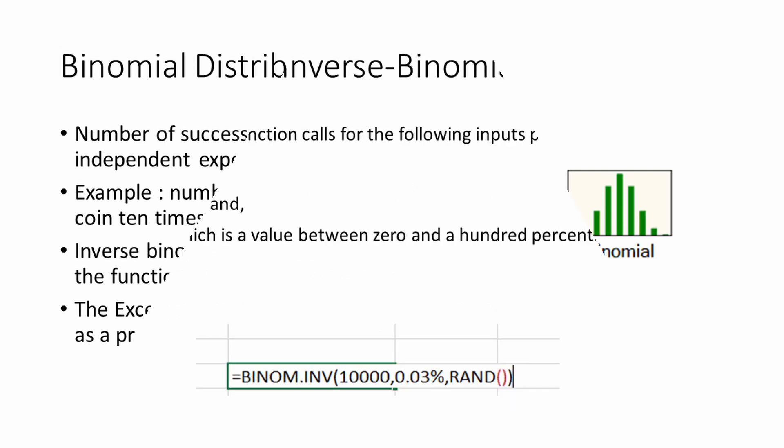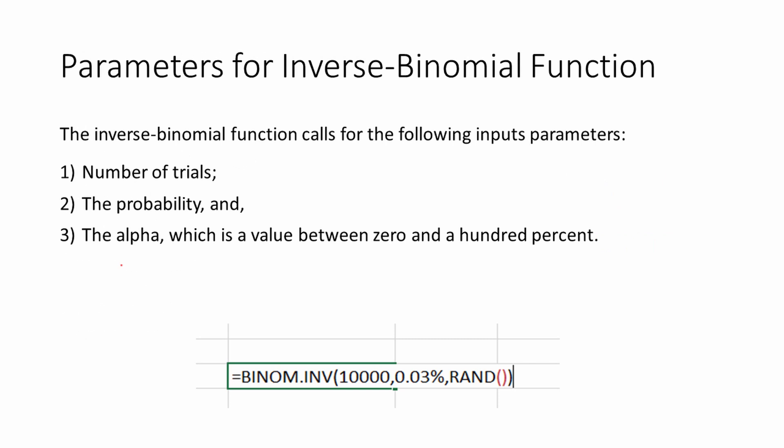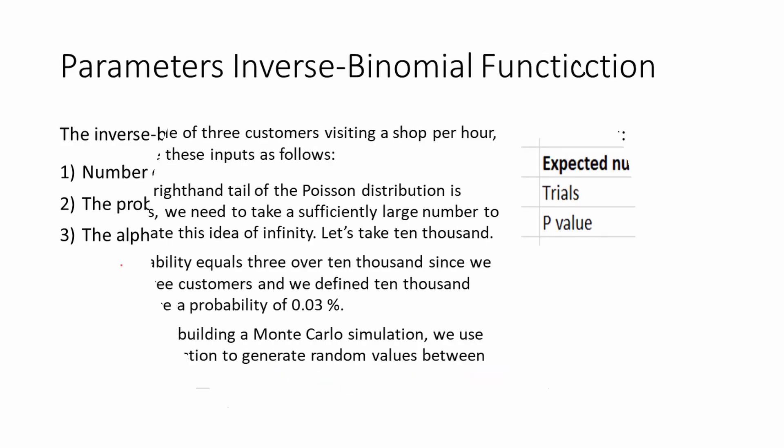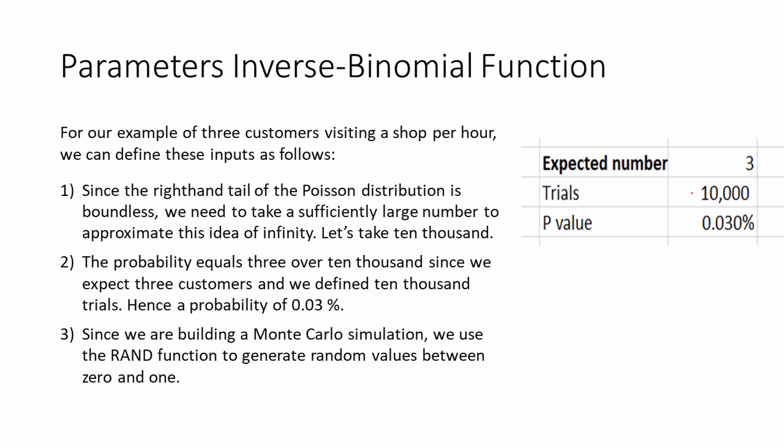The inverse binomial function calls for the following inputs: 1. Number of trials. 2. The probability. And 3. The alpha, which is a value between 0 and 100%. For our example we can define these inputs as follows. First, since the right-hand tail of the Poisson distribution is boundless, we need to take a sufficiently large number to approximate the idea of infinity — let's take 10,000. Second, the probability equals 3 over 10,000 since we expect 3 customers and we defined 10,000 trials, giving a probability of 0.03%. Third, since we are building a Monte Carlo simulation, we use the RAND function to generate random values between 0 and 1.